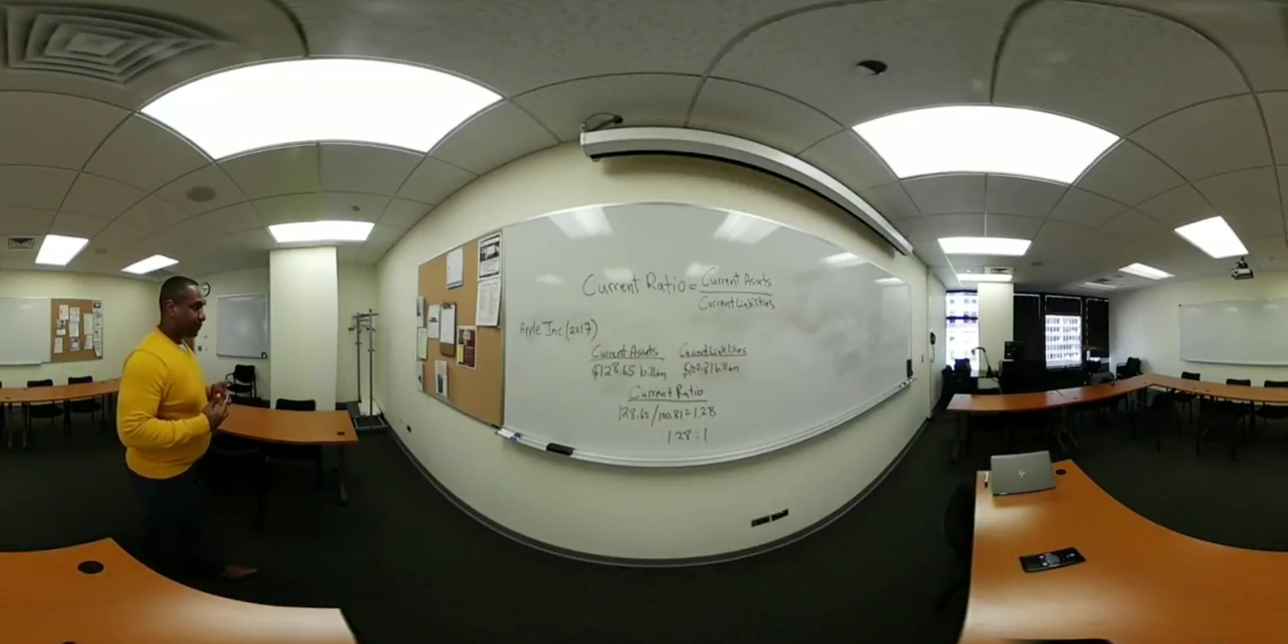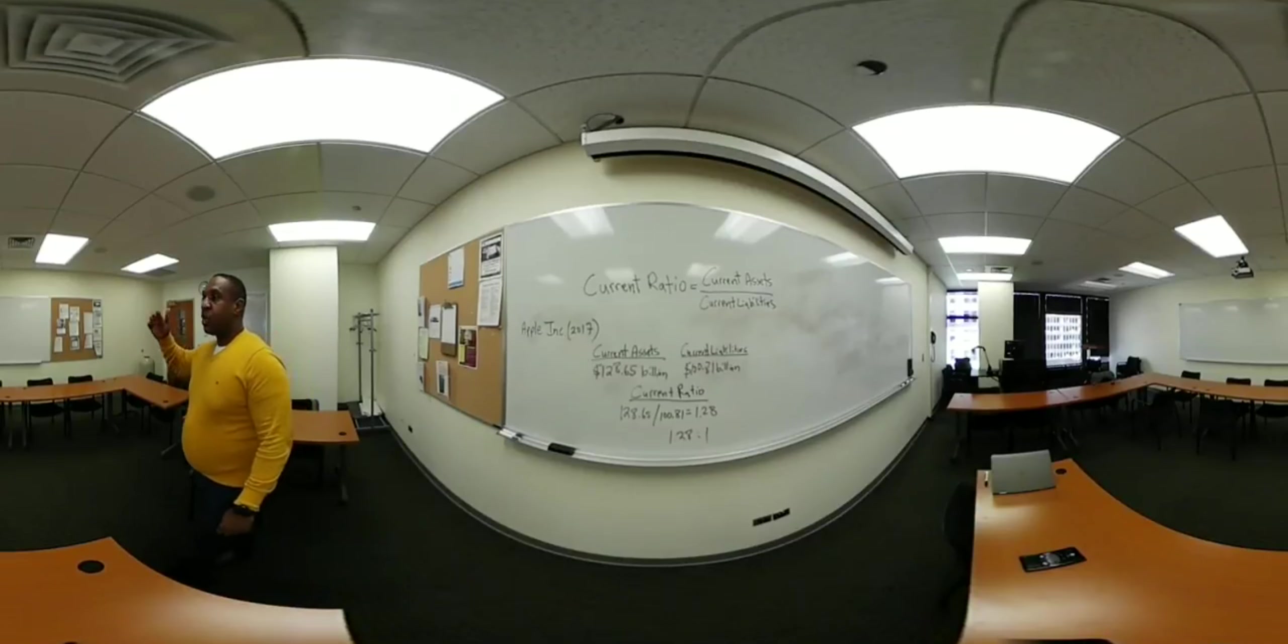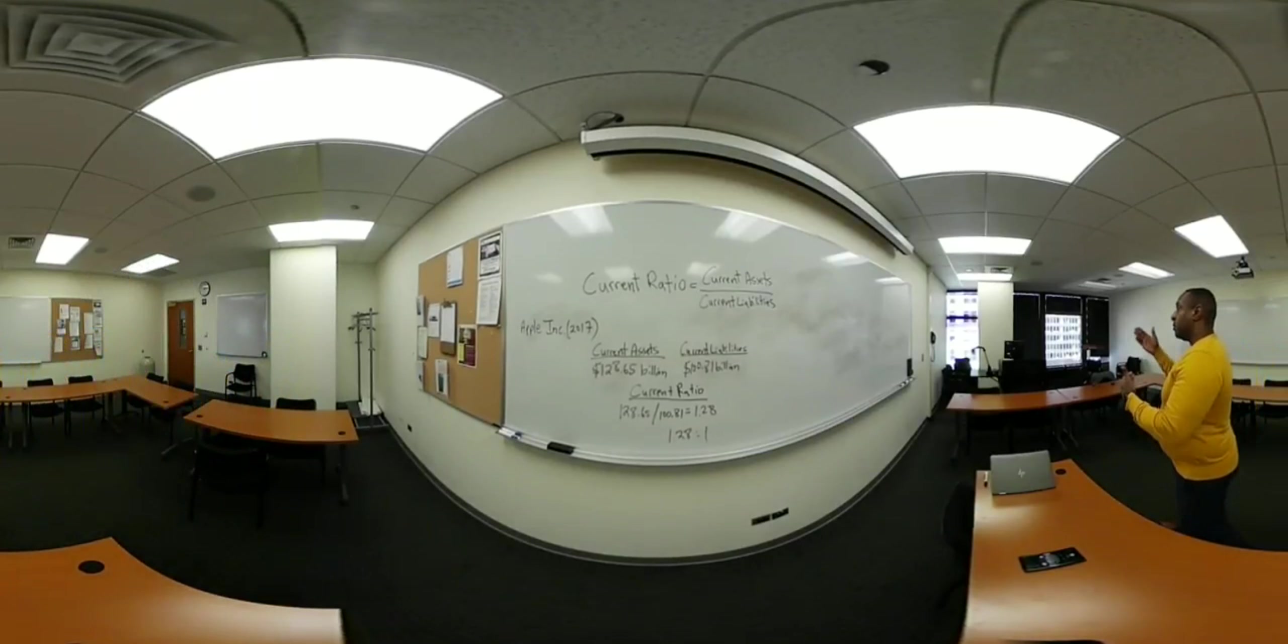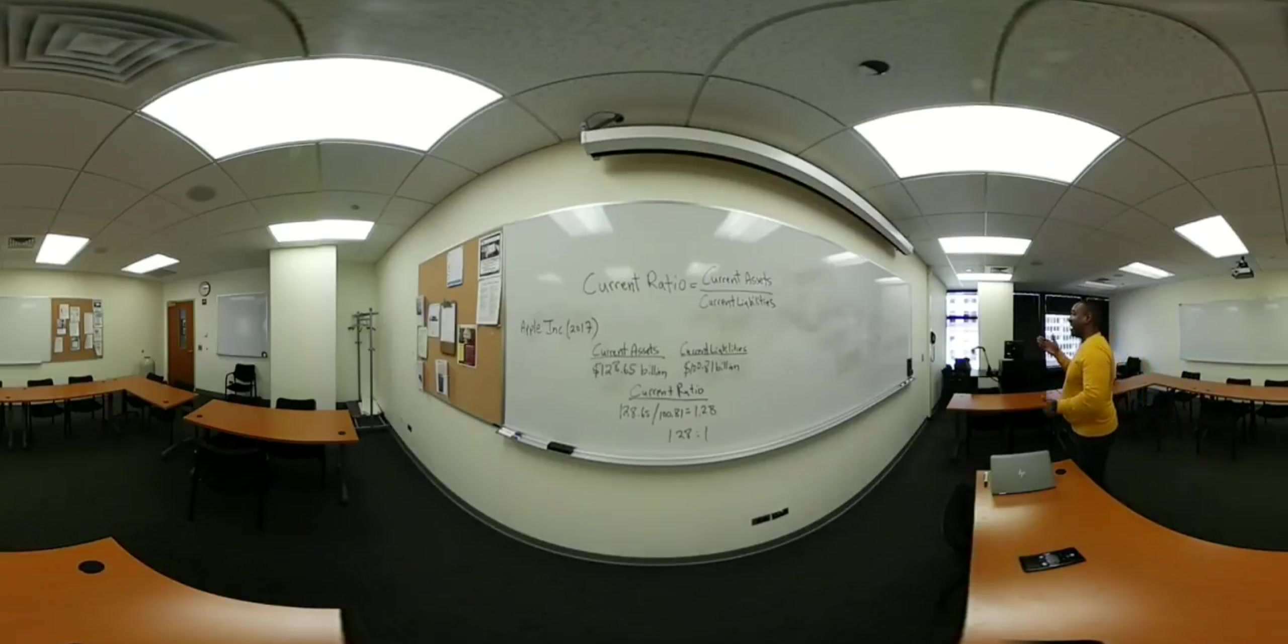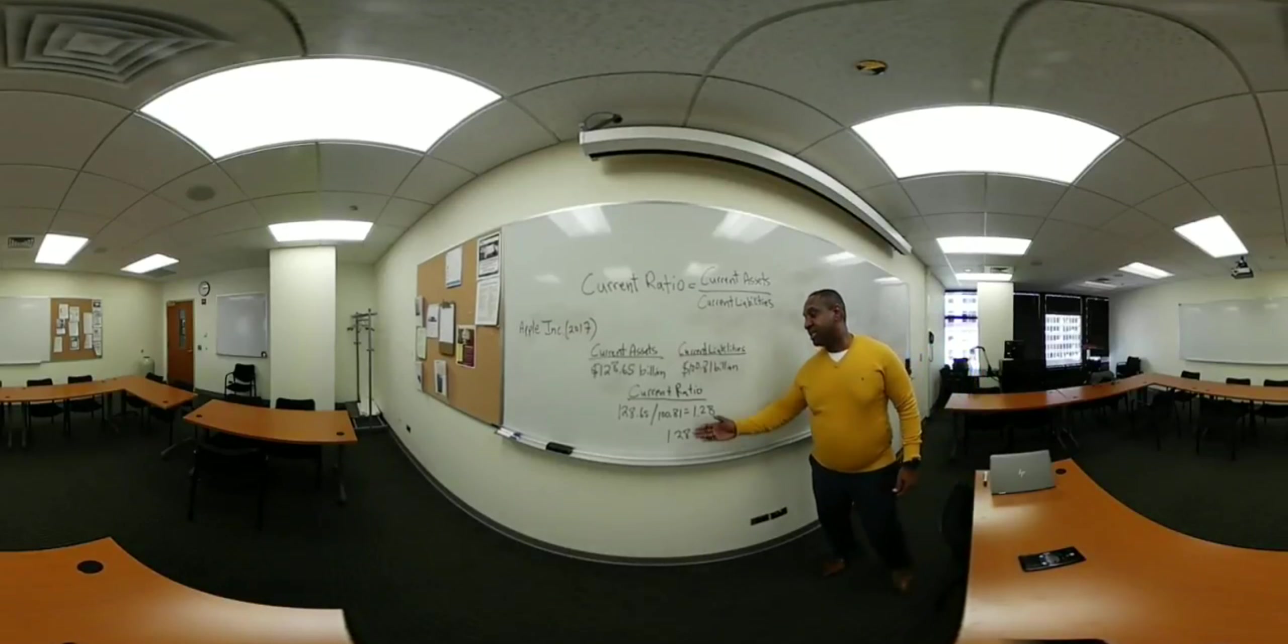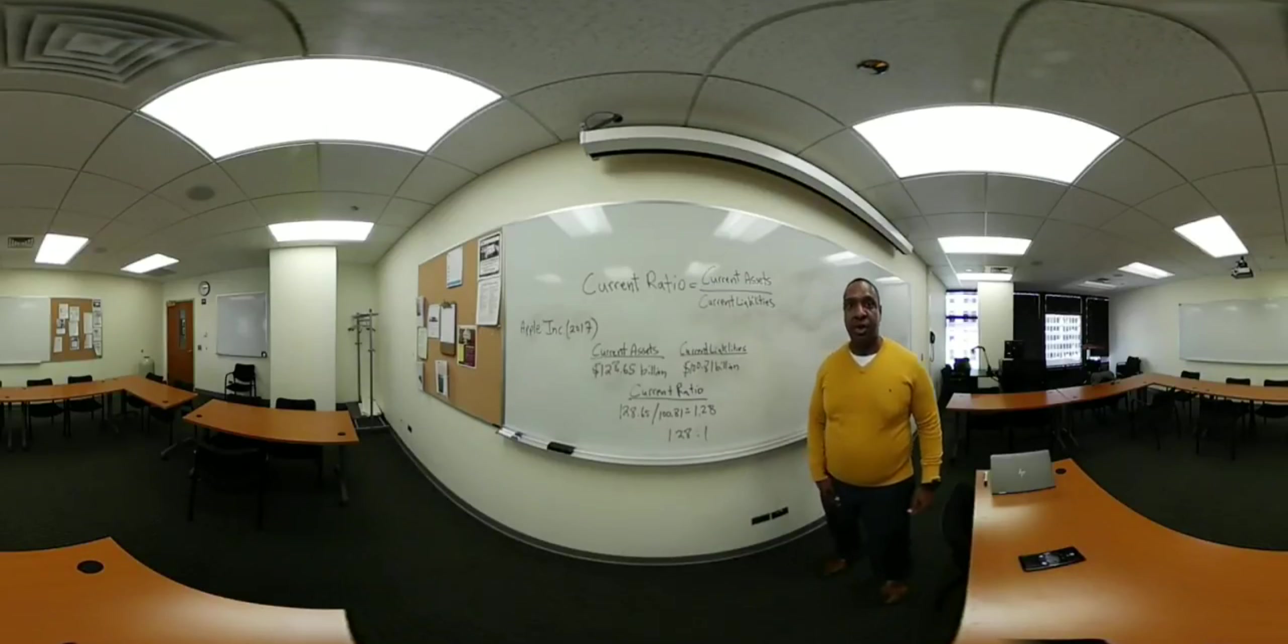When you hear or read about a current ratio greater than $1 being good, that means you're more than meeting that dollar of current liabilities. In this case, Apple is exceeding that because they have over $1 of current assets to meet their current liabilities.